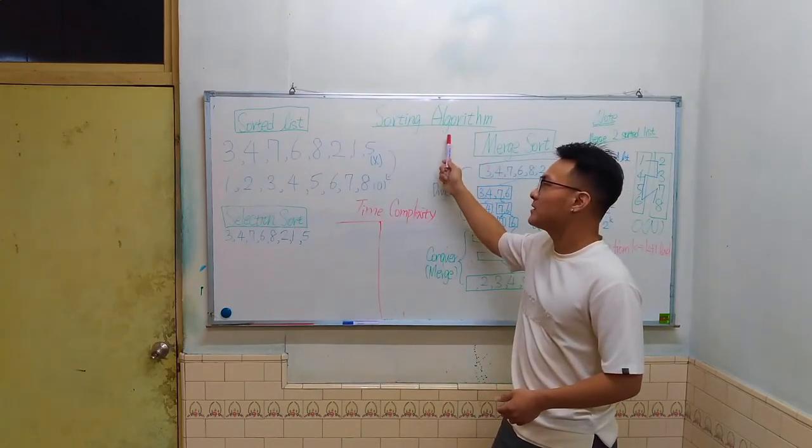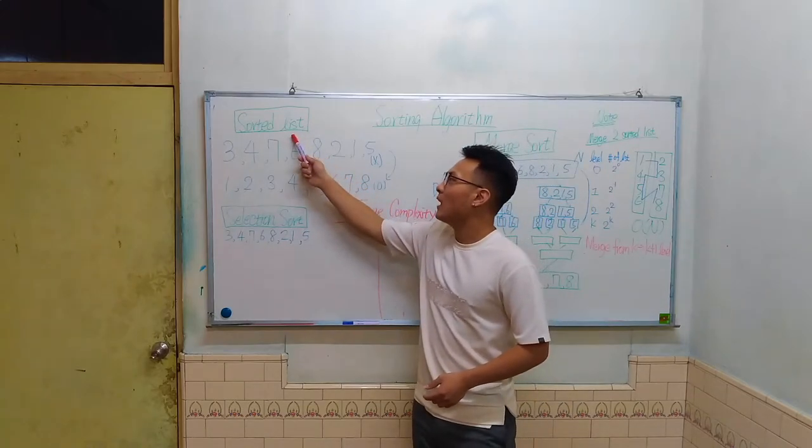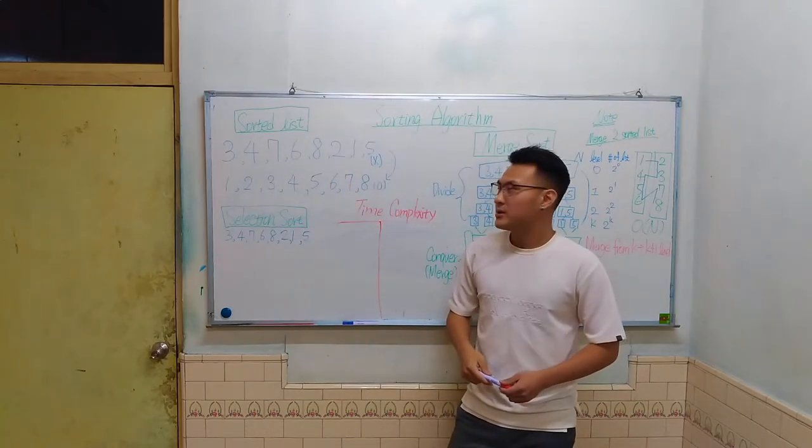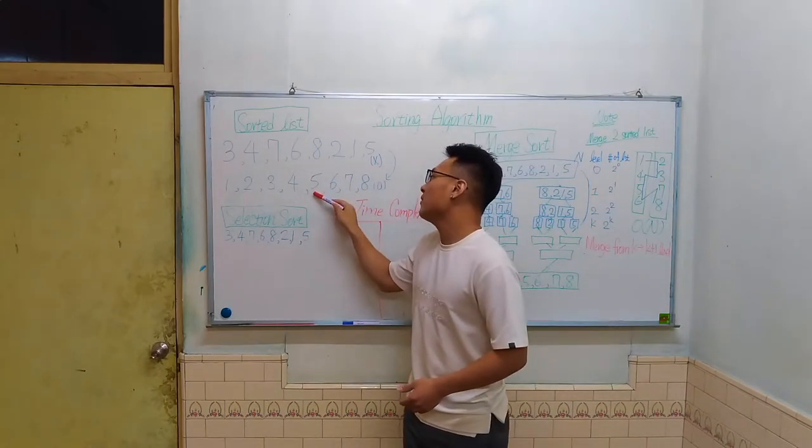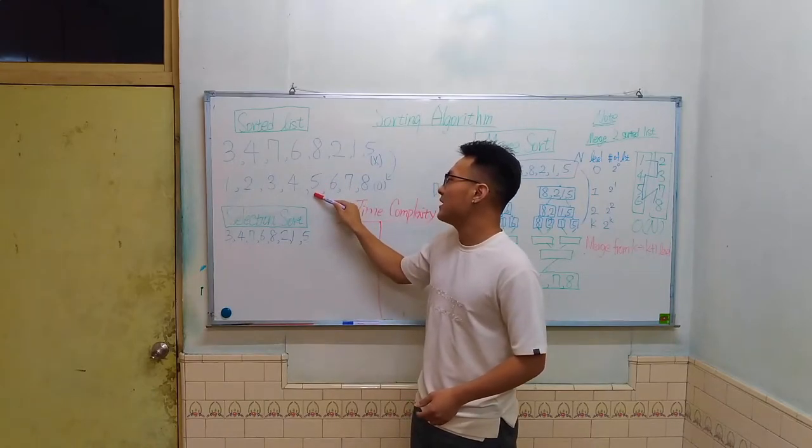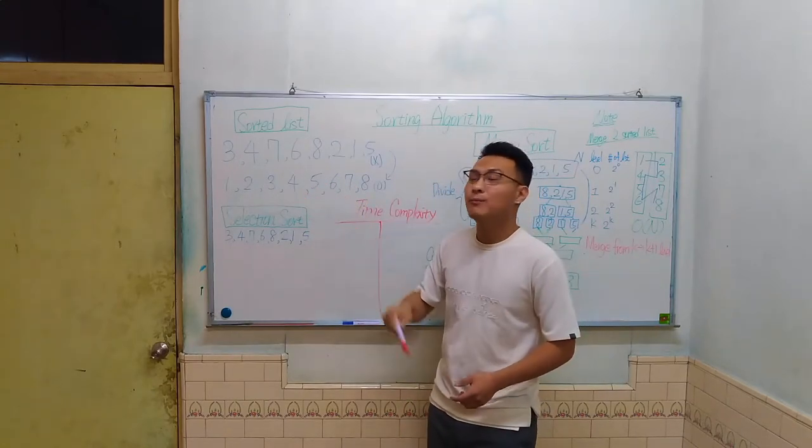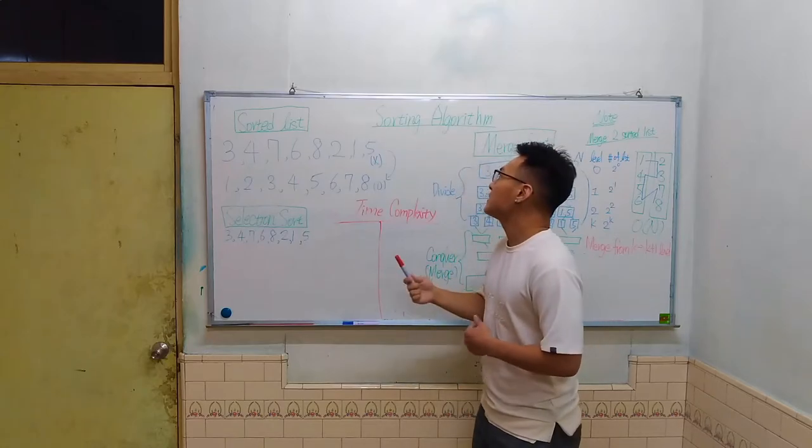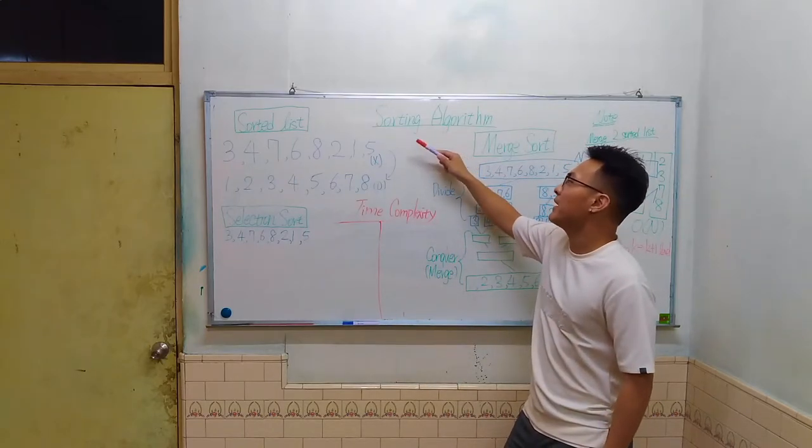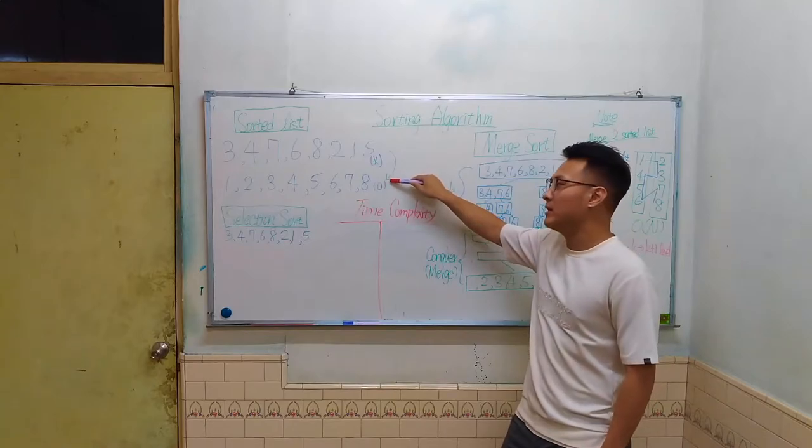Before we talk about the topic today, let's talk about what is a sorting list. A sorting list means that the value of each element in the list is greater than or equal to the previous one. And what sorting algorithms do is to make any arbitrary list into a sorting list.